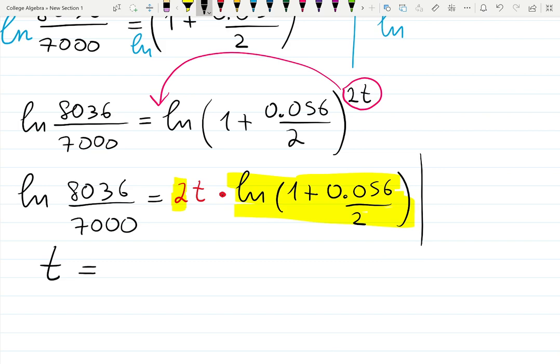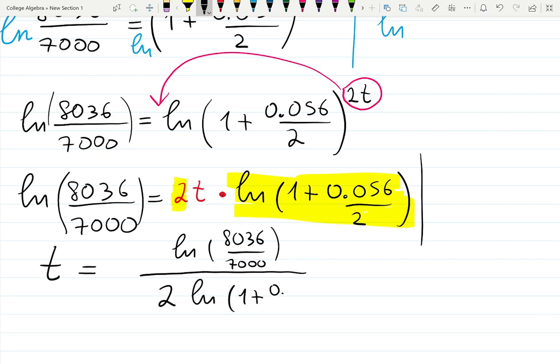Let's put parentheses if you want, natural log of 8036 all over 7000, and then all over whatever is in yellow: 2 natural log of one plus 0.056 all over 2.